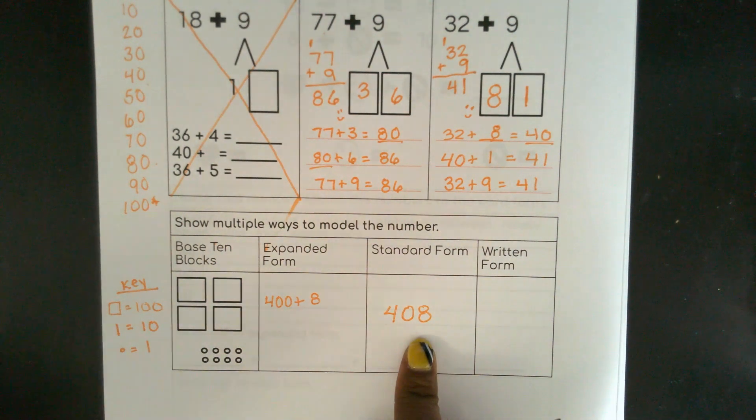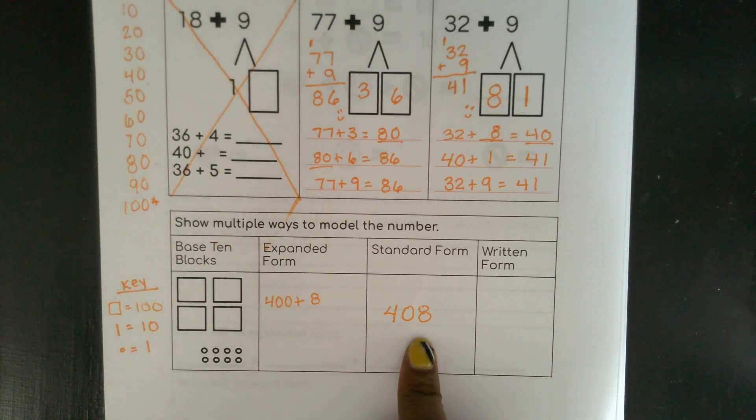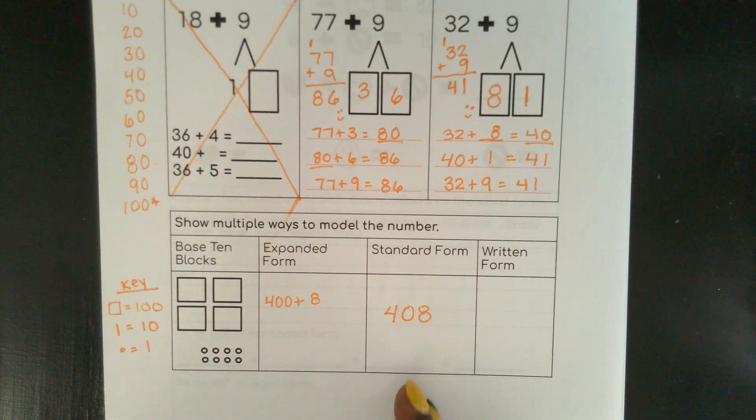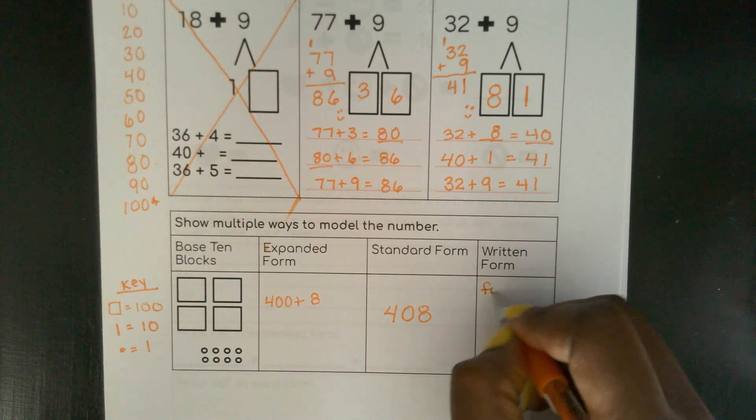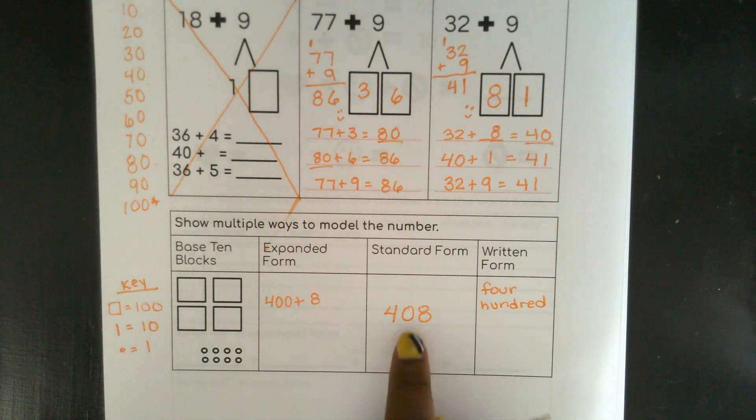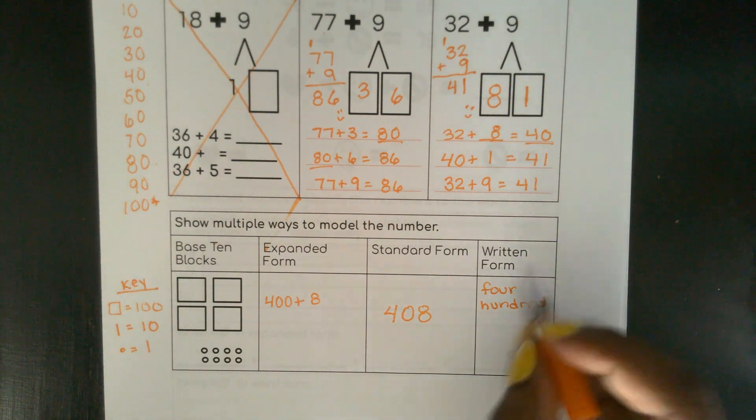So this is my standard form. Oh, remember name that number? So many times we've done that. Here we have no word bank, so we have to remember what those numbers look like when we spell them. So I have 400. Just 400. No 10s. And then 8.